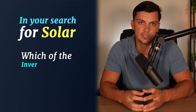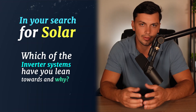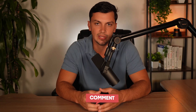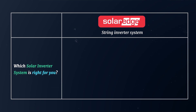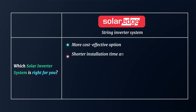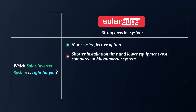So far in your search for solar, which of the inverter systems have you leaned towards and why? Post your thoughts down below in the comments. As I mentioned earlier, neither system is inherently better than the other — it all just depends on your specific needs. Starting off with the SolarEdge string inverter system, this is typically the more cost-effective option. Installation times are shorter and equipment costs are lower compared to microinverter systems. When it comes to price, you can expect to pay about 10 to 15 cents per watt less for SolarEdge, making it the cheaper of the two solutions.